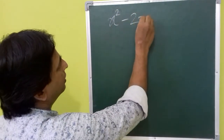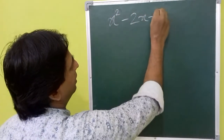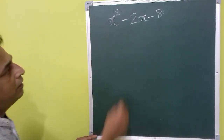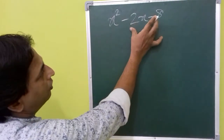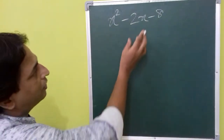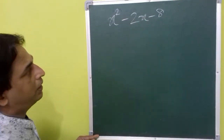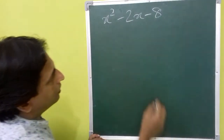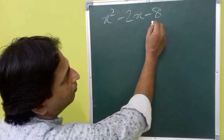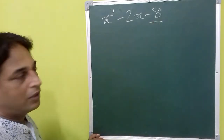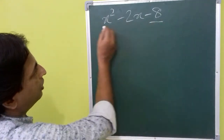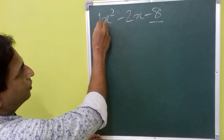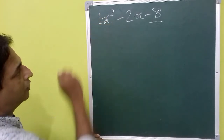So x squared minus 2x minus 8 — this is a quadratic polynomial. In this case we can use factorization using the splitting the middle term method. The first step is we need to multiply the constant term with the coefficient of the term x squared.